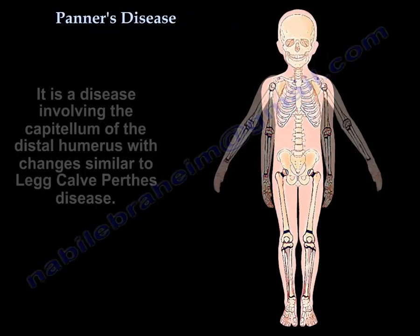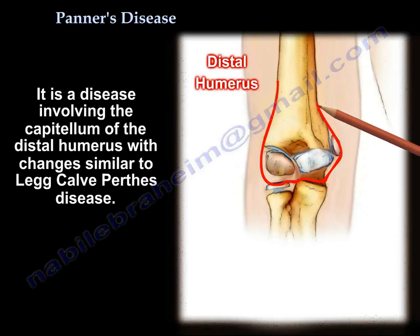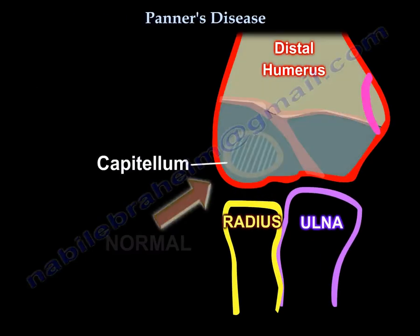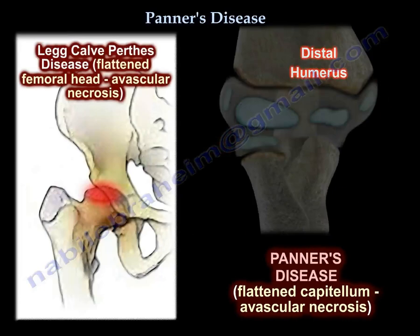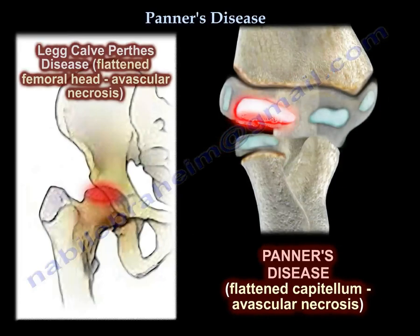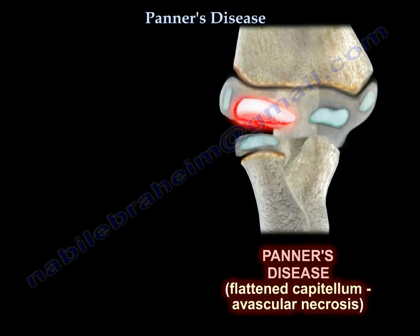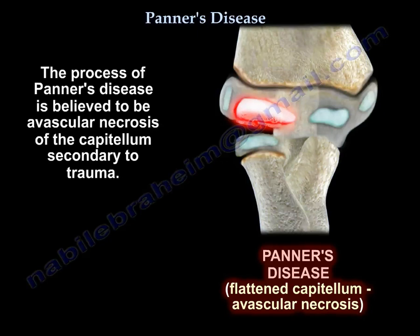Panner's disease is a disease involving the capitulum of the distal humerus, with changes similar to those that occur in Legg-Calvé-Perthes disease. Panner's disease is seen in younger patients, about 5 to 11 years old, and usually occurs in the dominant elbow. Loose bodies are not usually seen within the joint, and residual deformity is not common. The process in Panner's is believed to be avascular necrosis of the capitulum secondary to trauma.